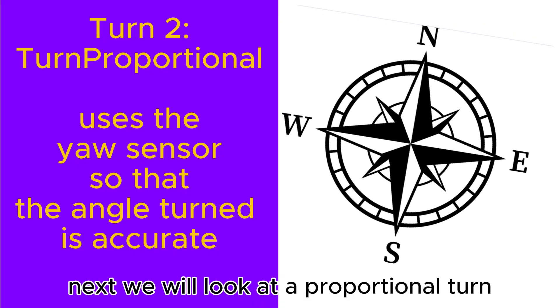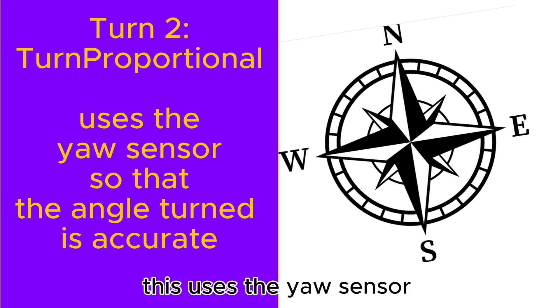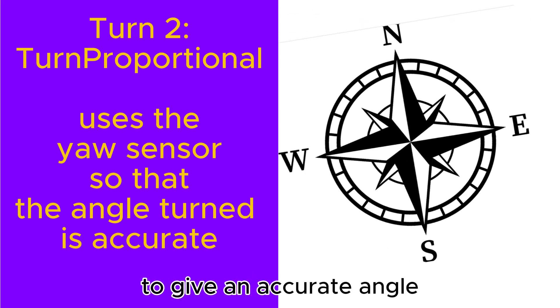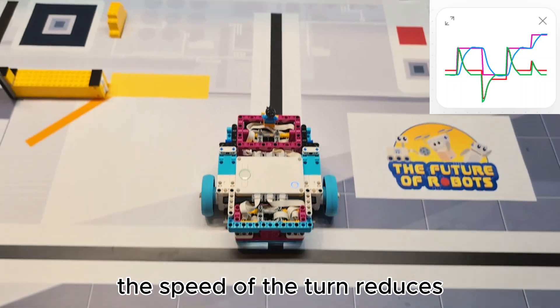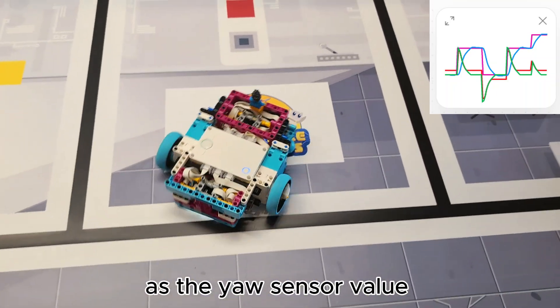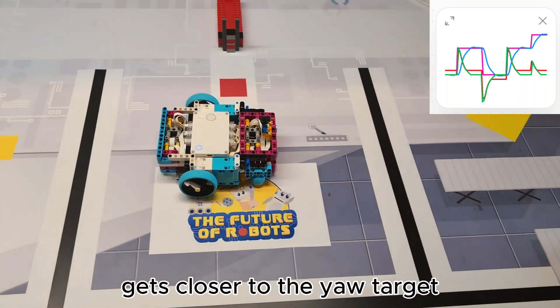Next, we will look at a proportional turn. This uses the yaw sensor to give an accurate angle. The speed of the turn reduces as the yaw sensor value gets closer to the yaw target.